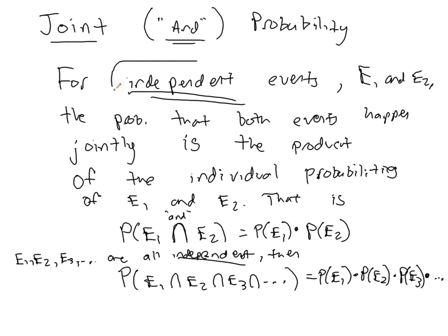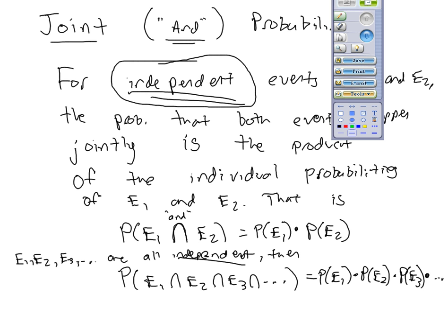The important part is they have to be independent. If one outcome does affect the probability of another outcome, you do not have independent events.